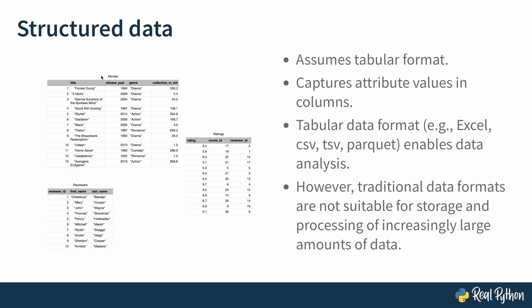For example, a so-called movies dataset has movie attributes such as title, release year, genre and collection. Tabular data naturally invites statistical data analysis. However, tabular formats come with their own limitations in regards to the number of rows they can store.